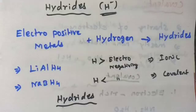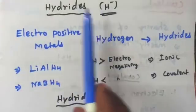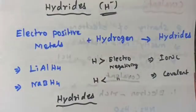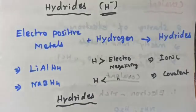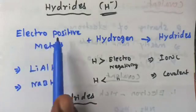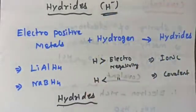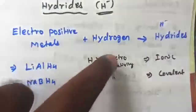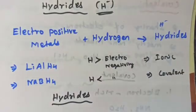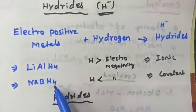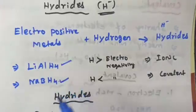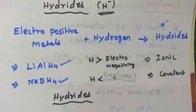Welcome. In this video we discuss about hydrides. Hydrides are compounds containing H minus. Hydrogen forms binary hydrides with electropositive metals, including metals and non-metals. It is also an electron-rich compound. Hydrogen also forms ternary hydrides with two metals — for example, lithium aluminum hydride and sodium borohydride.